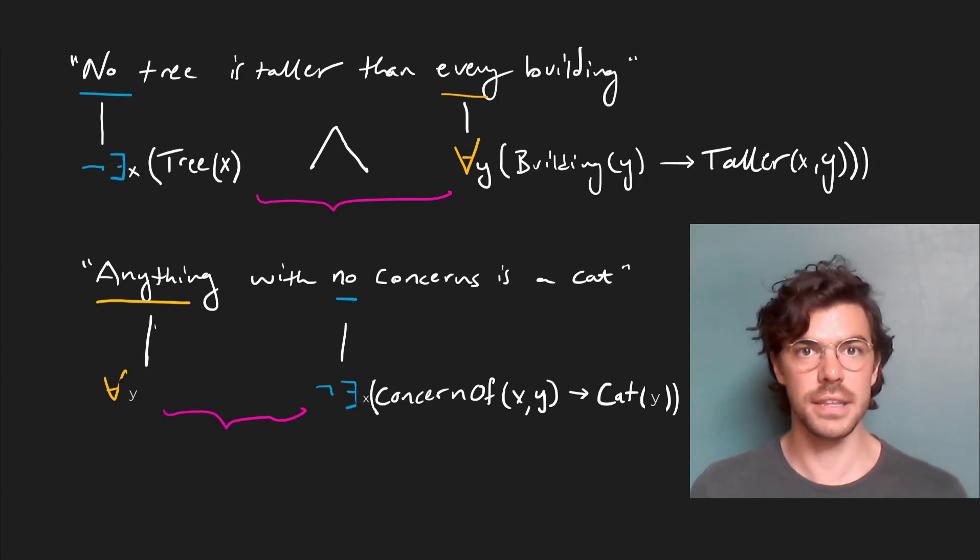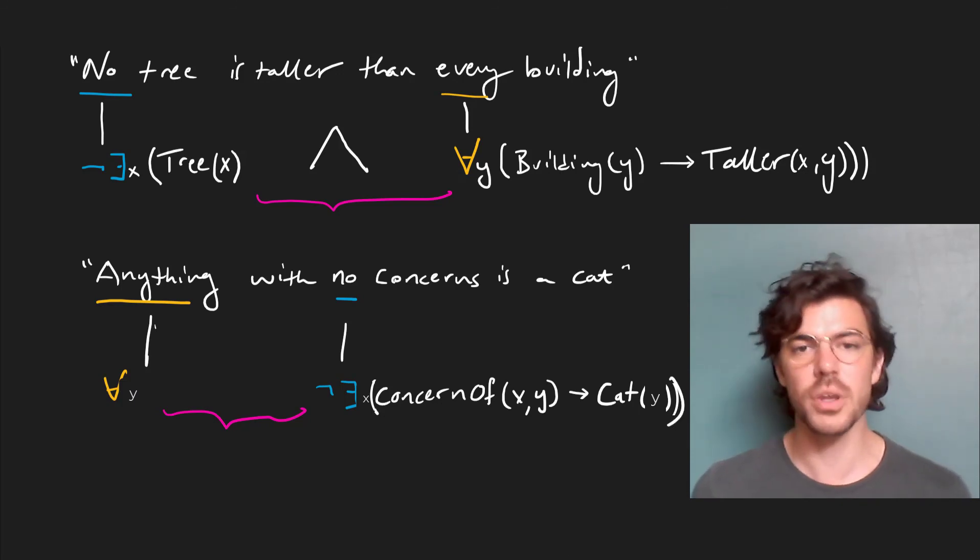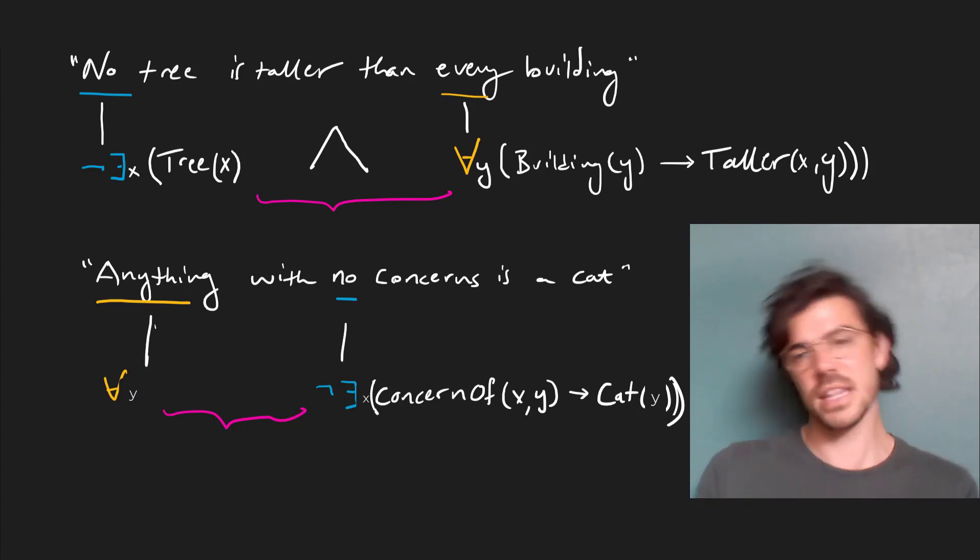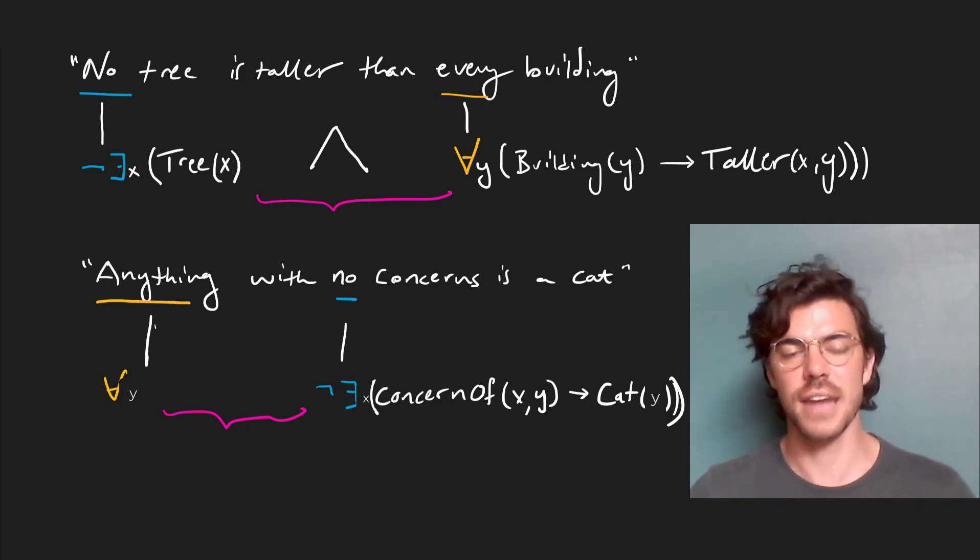Reading from left to right then, this says that for anything, if there doesn't exist something which is a concern of it, then that thing is a cat. And there you have it. We've broken this down again into a series of steps, translated the steps, and then put them all together to get us our sentences. And that's a pretty straightforward way of doing it.